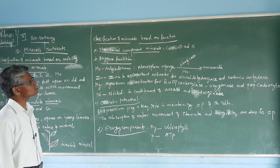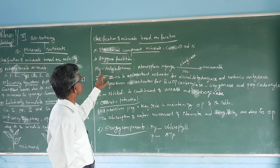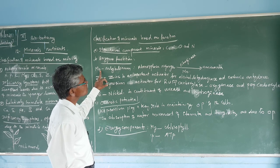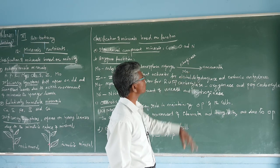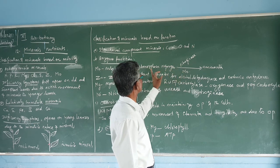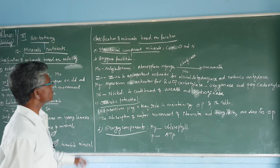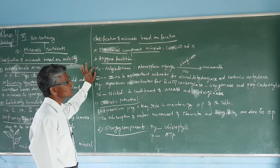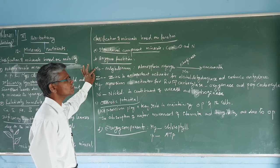The second category is enzyme function. For example, molybdenum is involved in the conversion of atmospheric nitrogen into ammonia via the enzyme nitrogenase. The nitrogenase enzyme requires molybdenum for this enzymatic reaction.